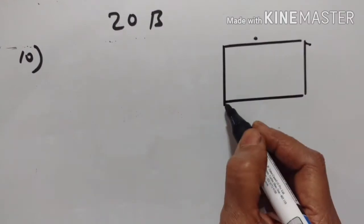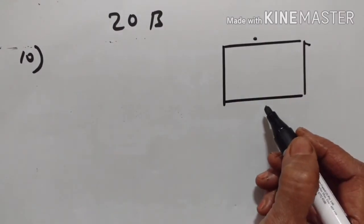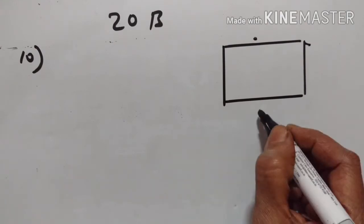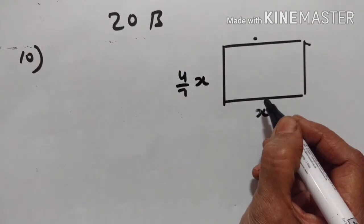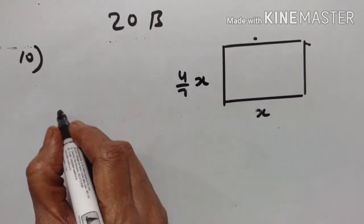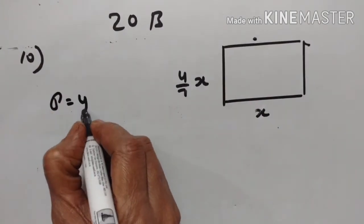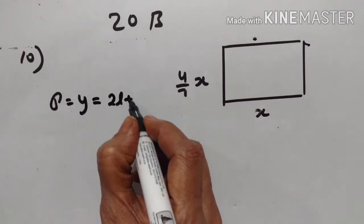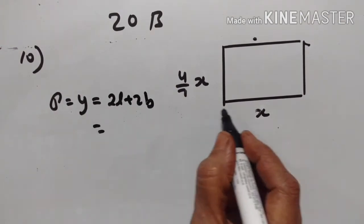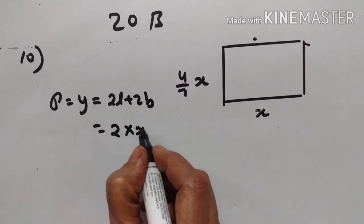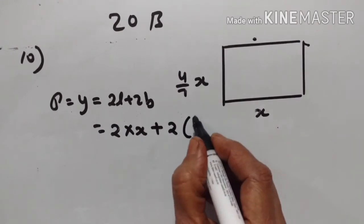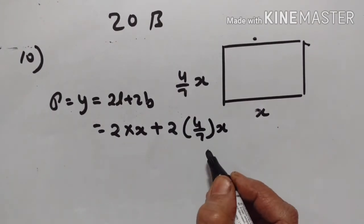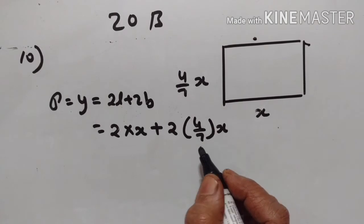Tenth problem. The width of a rectangular room is 4 upon 7 of its length x. If the length is x, then the width is equal to 4 upon 7 x. And its perimeter is y. Perimeter is equal to 2L plus 2B. Length is equal to x, so we get 2x plus 2 into 4 upon 7 x. Write an equation connecting x and y.